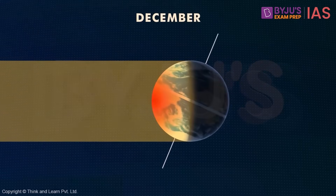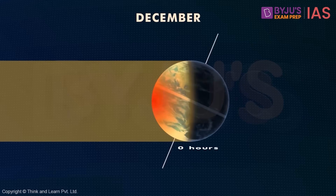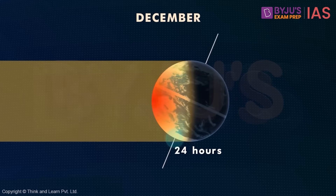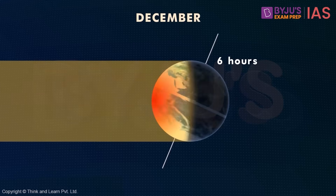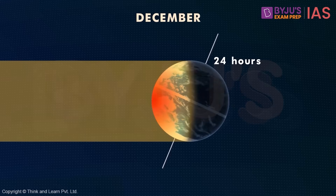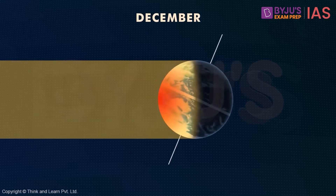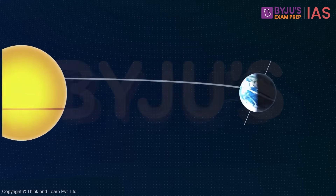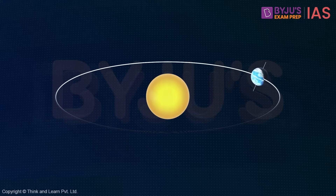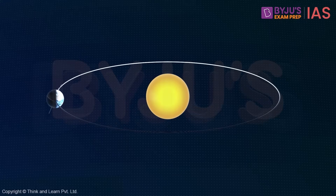Look at what happens over the South Pole — we have 24 hours of daylight, and at the North Pole, it's 24 hours of darkness. So, this summarizes the change of seasons that we experience over the earth as it goes around the sun.